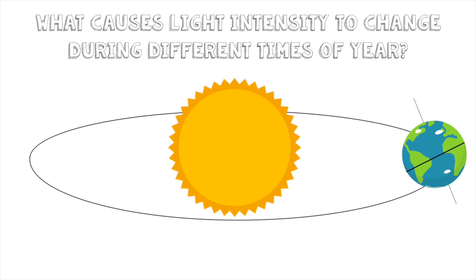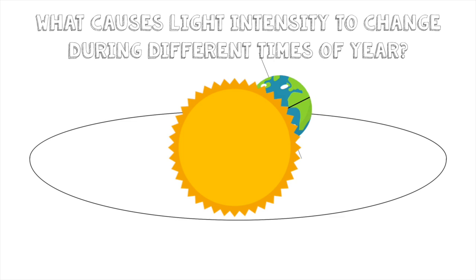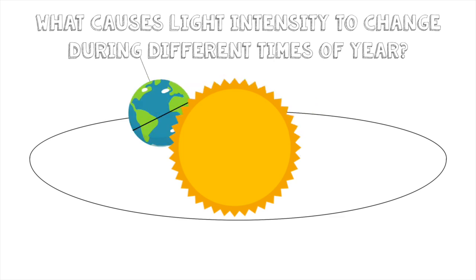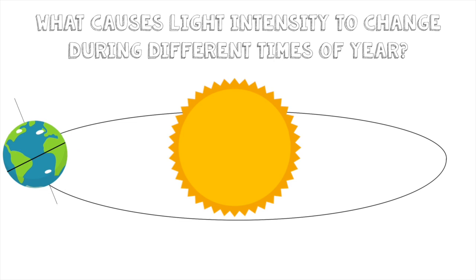The Earth doesn't stay in this position — it orbits the Sun. As it orbits, its axis stays pointing in the same fixed direction in space. So by the time it gets about halfway through the orbit, six months later, the northern hemisphere is now pointing away from the Sun and getting indirect light — that's wintertime in the northern hemisphere. And the southern hemisphere is now pointing towards the Sun, getting direct, more intense light, and it's summertime there.